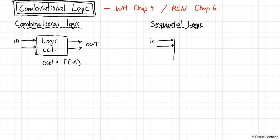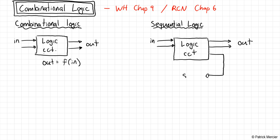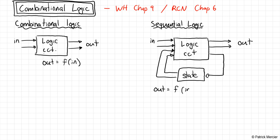In sequential logic, we still have inputs going into a logic circuit that create outputs. But then some of these outputs will go back — there's some notion of state or memory — and the output of this state feeds back to the inputs. So what we mean is the outputs are now a function of the inputs and of the previous inputs. We're not going to talk about sequential logic right now; that's covered later. What we're going to focus on is combinational logic.